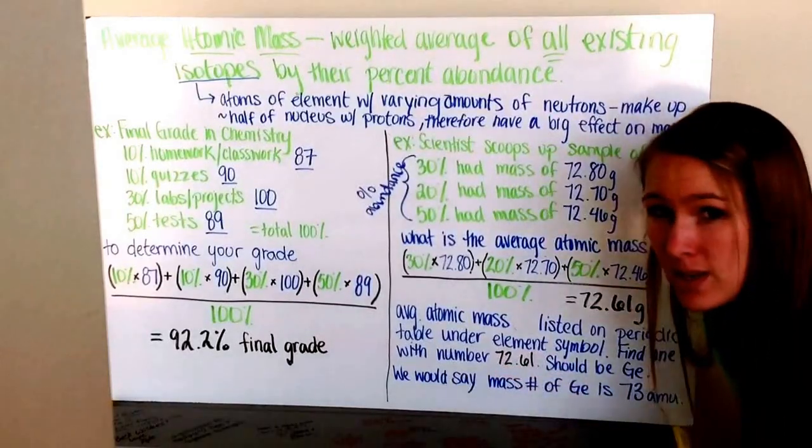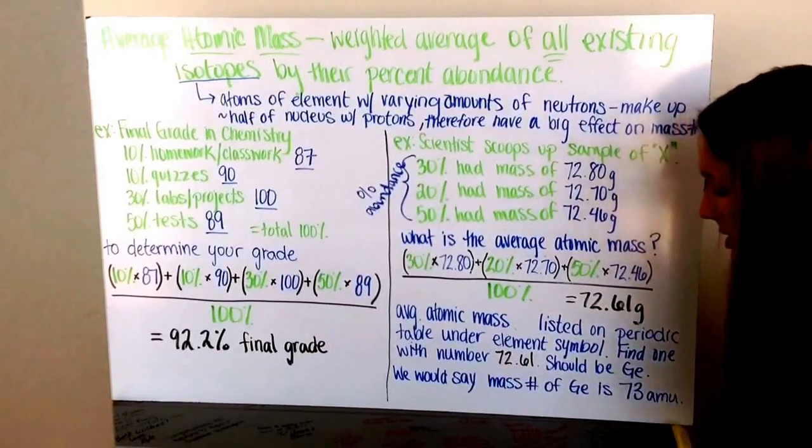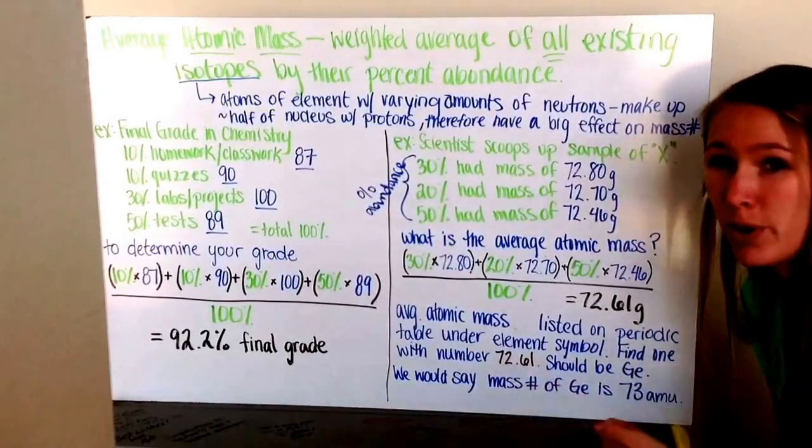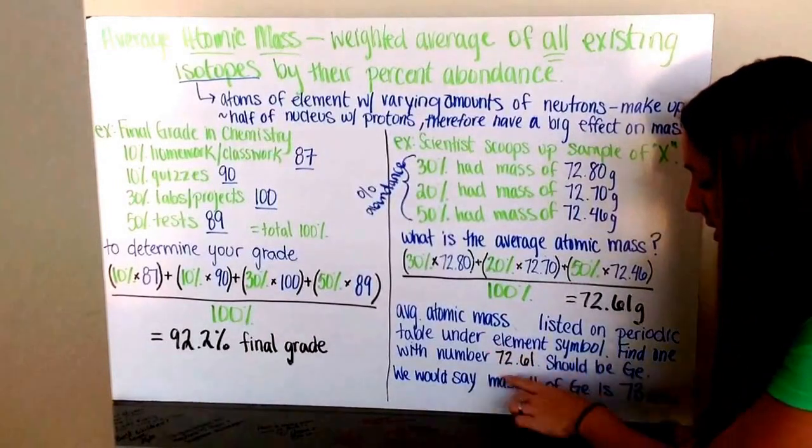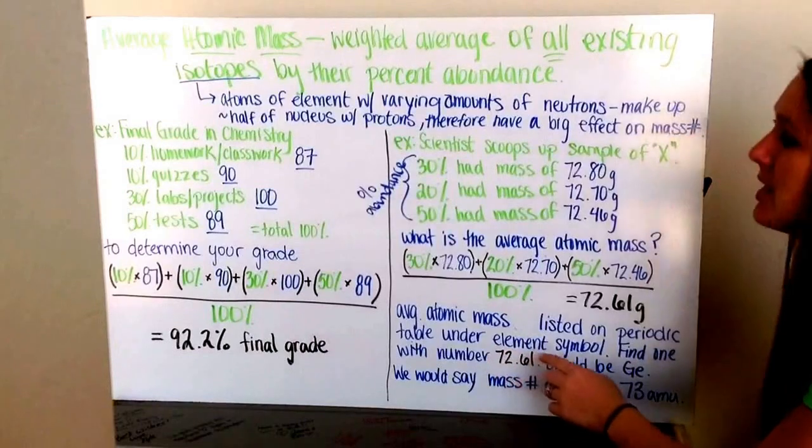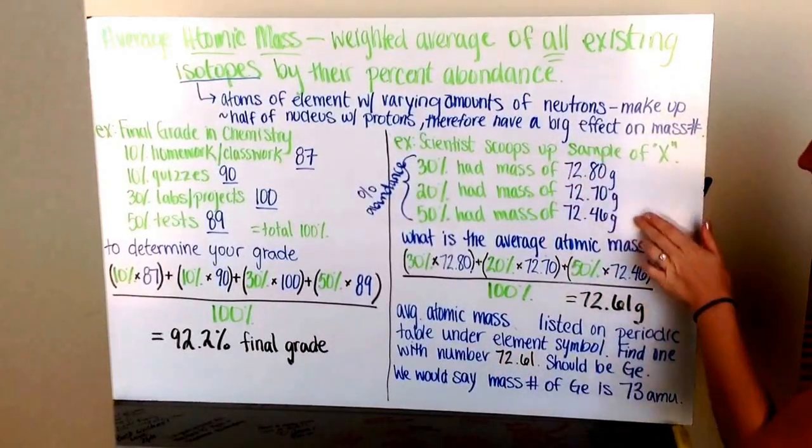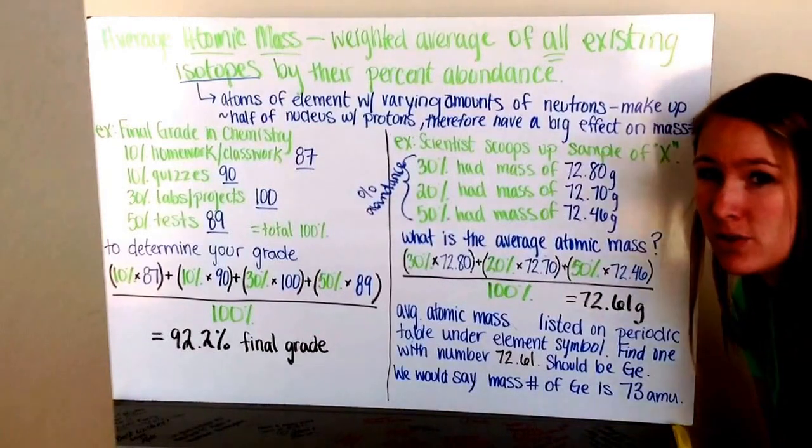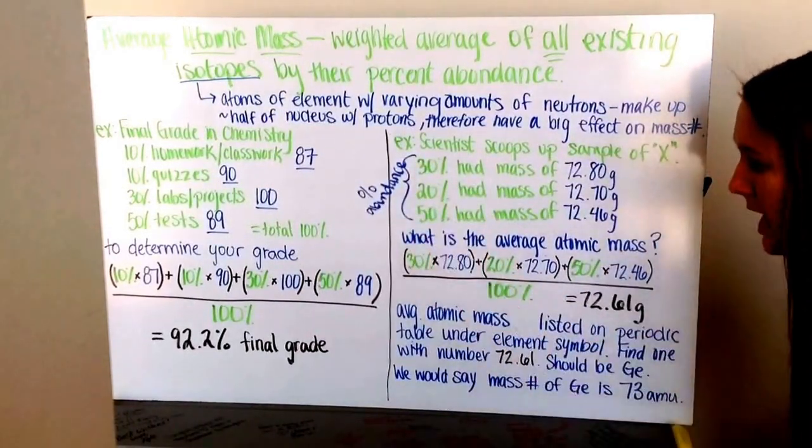Germanium's average atomic mass is 72.61. This is different than its mass number. Mass number is protons plus neutrons, which for germanium we'd round to 73. Average atomic mass is where we look at each individual isotope and its mass, weighted by percent abundance.